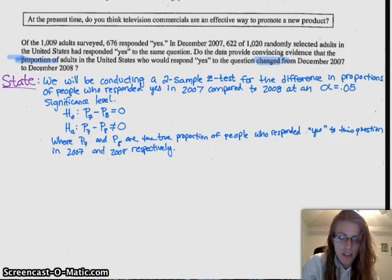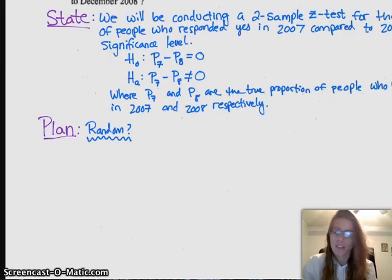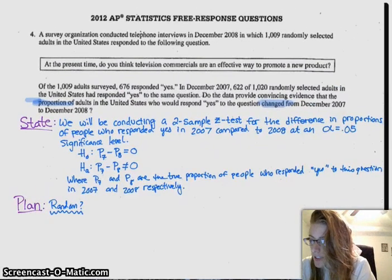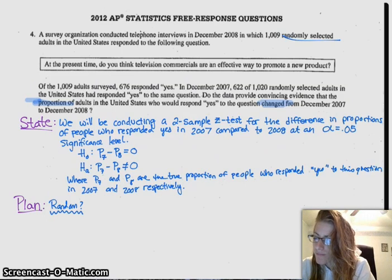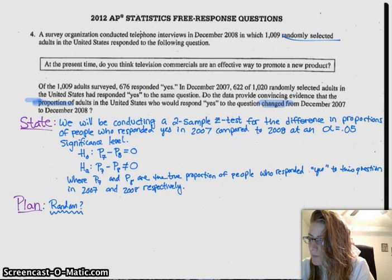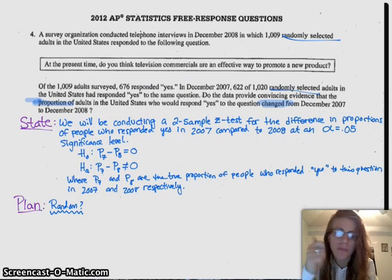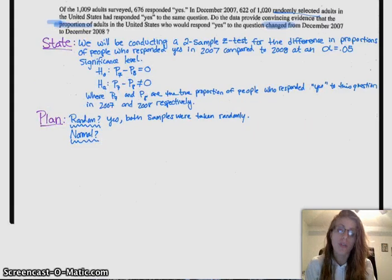Then we want to plan, check all of our conditions. One, random. If we go back to this, it says we had randomly selected adults in 2008, and also 2007 also had randomly selected. So yeah, it was true for both samples.